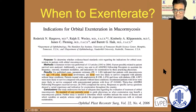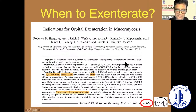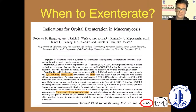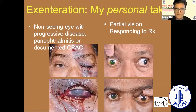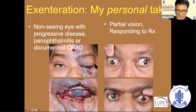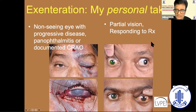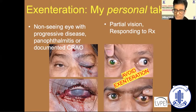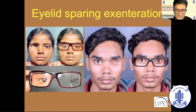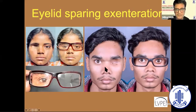Regarding exenteration, we only have data from the pre-COVID era, and that data still shows no consensus on exactly which cases of mucormycosis should be exenterated in order to improve survival. My personal take is that situations with a non-seeing eye, panophthalmitis, or progressive disease might warrant exenteration. Whereas if there is partial vision and the patient is responding to treatment, avoid exenteration as much as possible. When you do perform an exenteration, it is advantageous when an ophthalmologist or oculoplastic surgeon does it — we perform eyelid-sparing exenteration, which covers the socket well and enables much quicker rehabilitation.